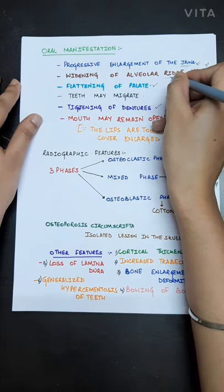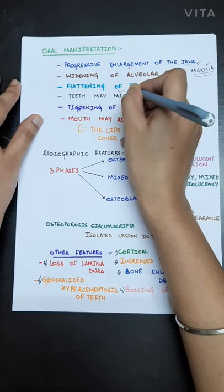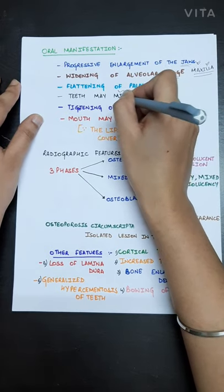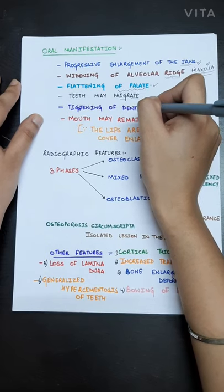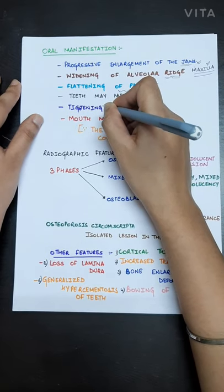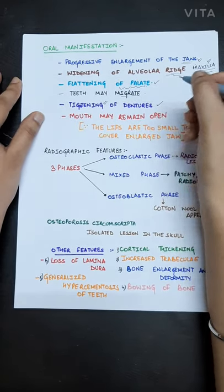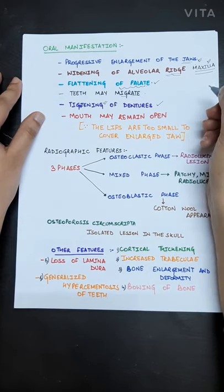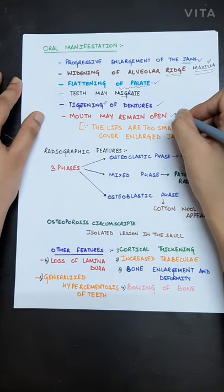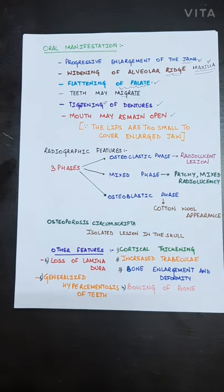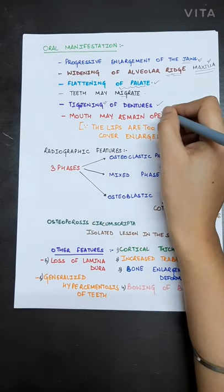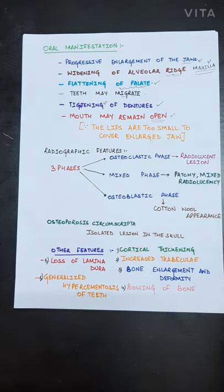There is widening of the alveolar edge, flattening of the palate, teeth may migrate. The denture wearing patients will complain of tightening of the dentures. So you have to remake the dentures periodically. Mouth may remain open because the size of the jaws are getting increased day by day, so the lips are too small to cover the enlarged jaw. The mouth may remain open in chronic cases.